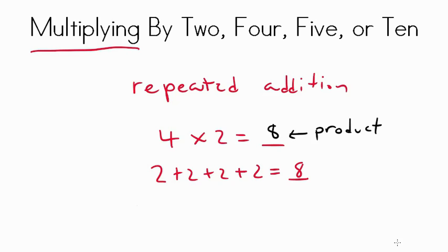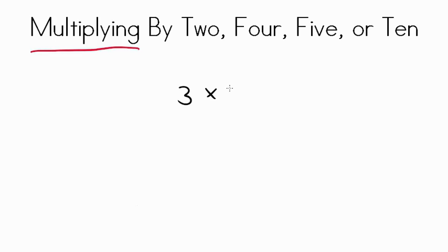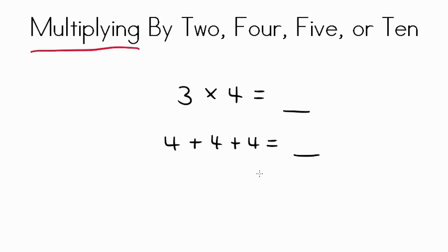Let's try one with 4s. If I give you the multiplication fact 3 times 4, and we're trying to figure out the product, what we're really doing is repeating 4 three times: 4 plus 4 plus 4. Skip count by 4 and see if you can come up with the answer. 4 plus 4 is 8, 4 more is 12. So 3 groups of 4 — that's a product of 12.